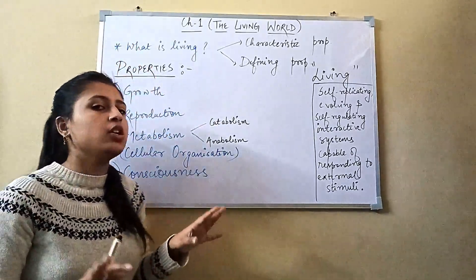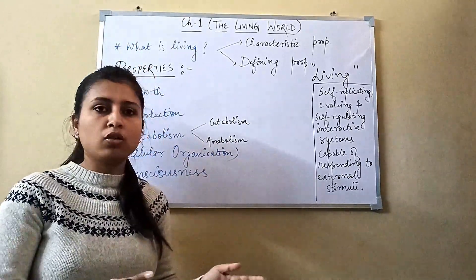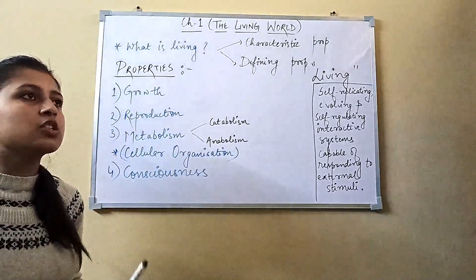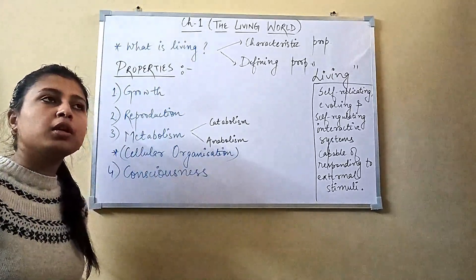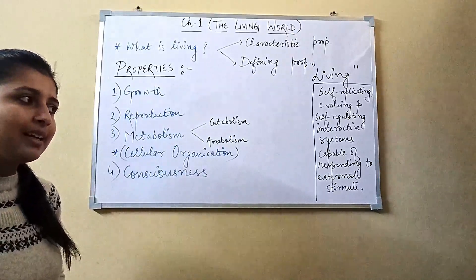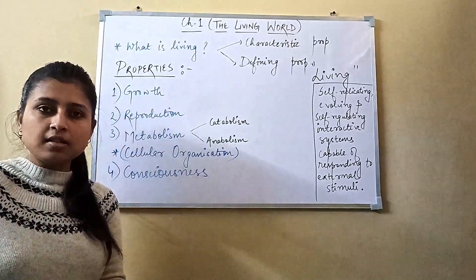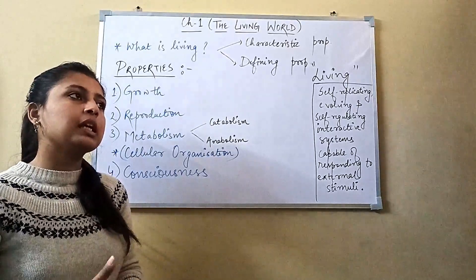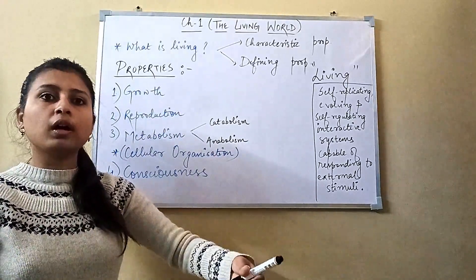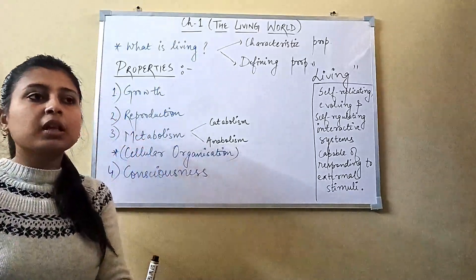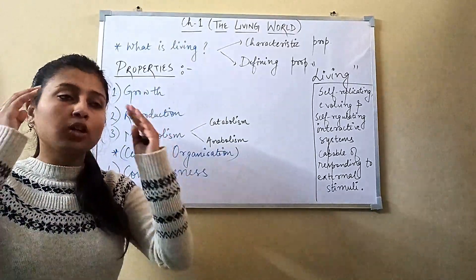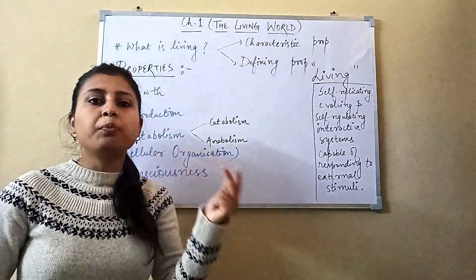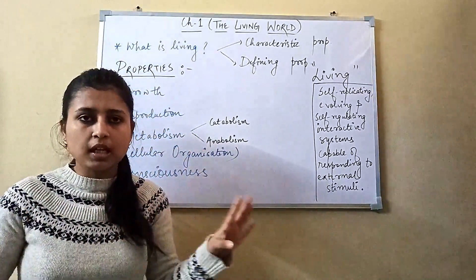We have basically 4 properties to examine in living and non-living organisms. The first is growth. Growth is the increase in biomass, which can be due to an increase in the number of cells or an increase in cell size, shape, and structure. Growth in plants is indeterminate — they grow lifelong — while in animals, growth is determinate, meaning it occurs only up to a certain age.